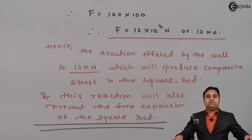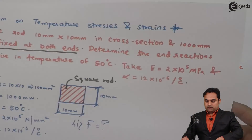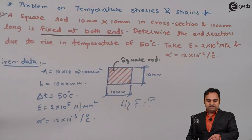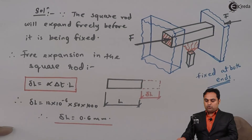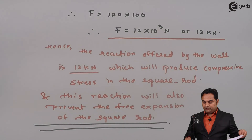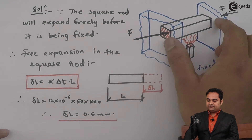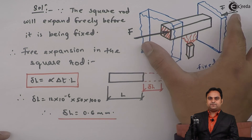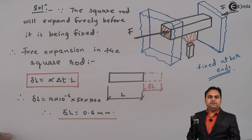As seen in this video, we were asked to calculate the end reaction due to a rise in temperature of 50°C. The end reaction offered by the wall is 12 kN. Because of this, compressive stress is developed in the square rod and the free expansion is prevented. With this, we complete the question.